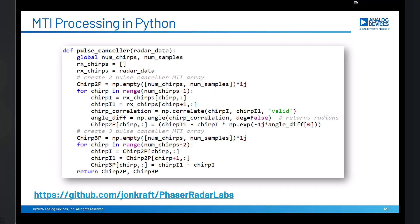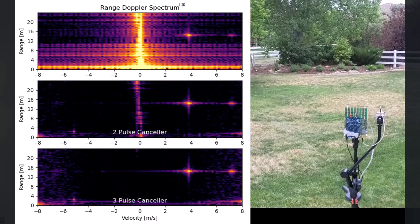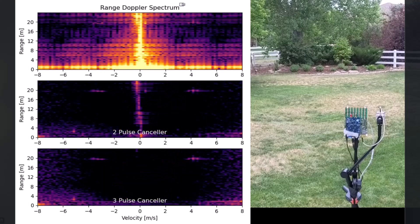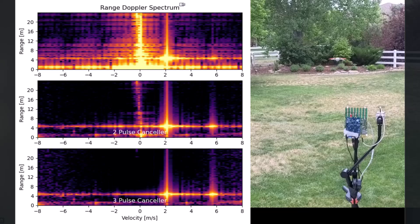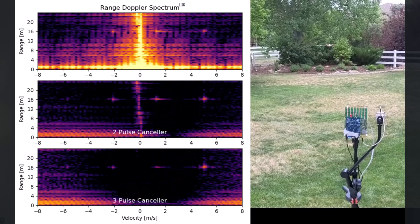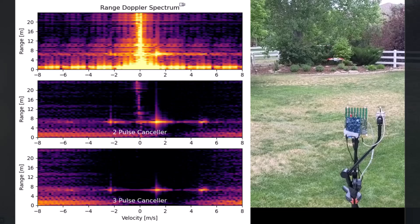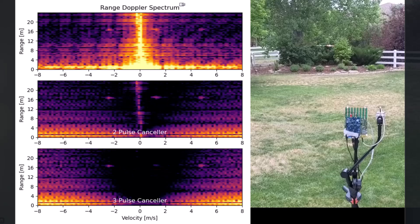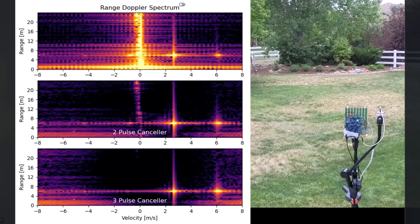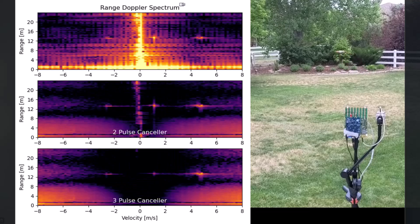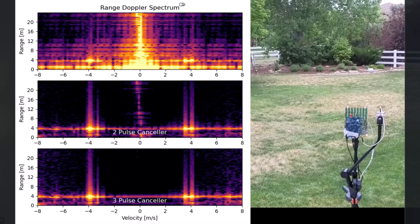And here's what those results look like. The top plot is with no MTI filtering at all, and then the two pulse canceller is in the middle. You can see that the transmit leakage and ground clutter are significantly attenuated but the drone retains its full signal amplitude. On the bottom I've added what the three pulse canceller looks like, and here the ground clutter is completely eliminated. However, the downside to MTI is that when the drone is stationary then you won't be able to see it, but you will see the micro doppler signature from the propeller blades.